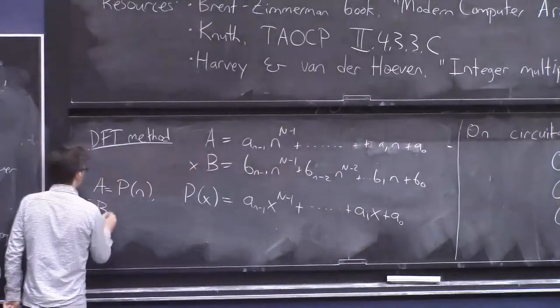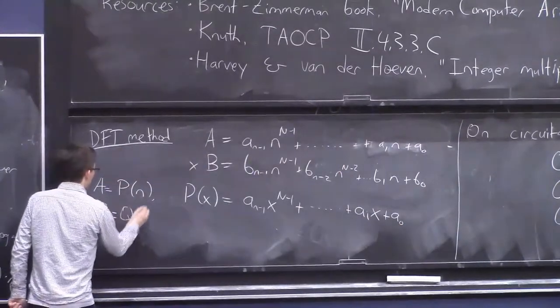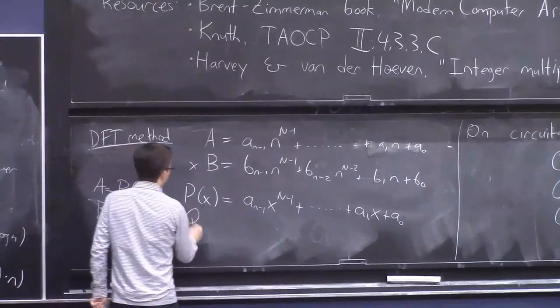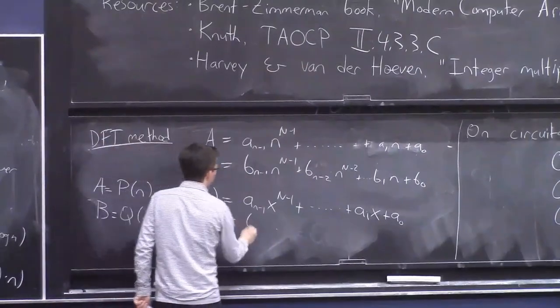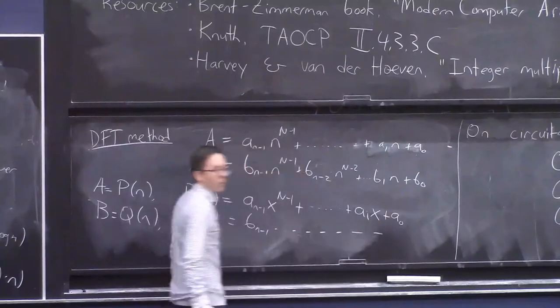A_n minus 1 x to the capital N minus 1 plus A_1 x plus A_0. And similarly, this number B is Q of n, where Q of x is also a polynomial, but with the b's as coefficients.